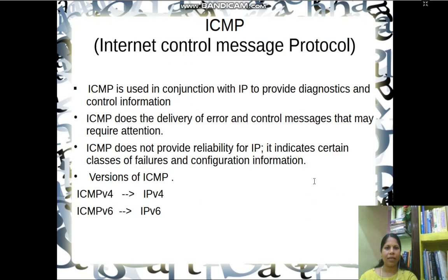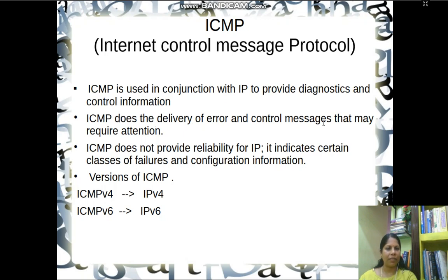So let's start with ICMP first. ICMP stands for Internet Control Message Protocol. Have you ever thought about how the internet is working? Is there any local or global administrator who looks after errors happening inside the network? What would happen if some error occurs? It is the responsibility of the router to find and report such errors with the help of ICMP protocol. ICMP works along with Internet Protocol to provide diagnostics and control information, and it handles the delivery of error and control messages that are very important for the functioning of the internet.